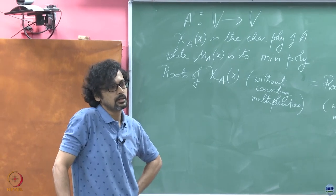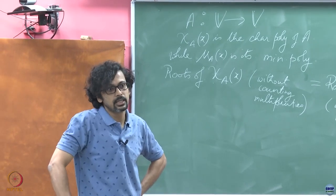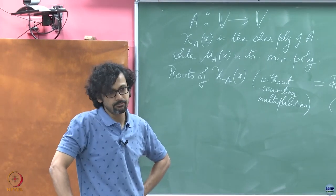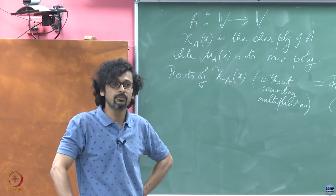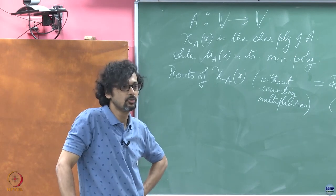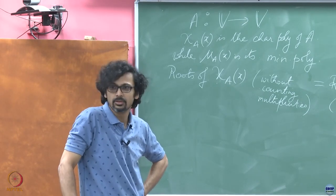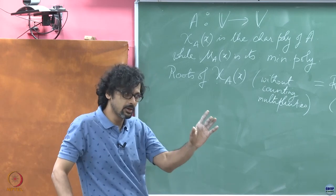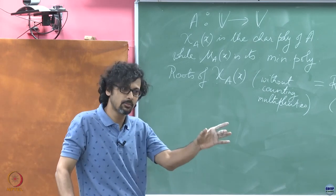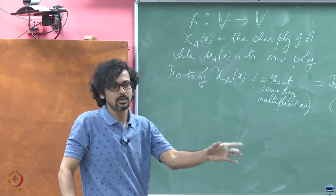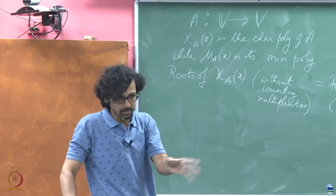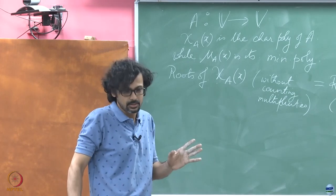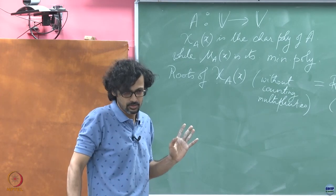So far, we have seen that the roots must be the same. But what if you need to repeat the root more number of times in one than in the other? We don't know whether a particular root appears more number of times in the characteristic polynomial or in the minimal polynomial yet. We have kept silent on that so far.